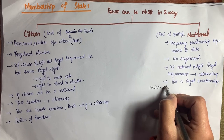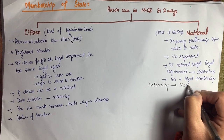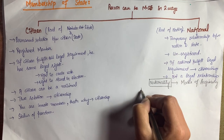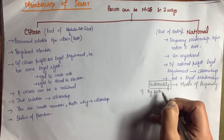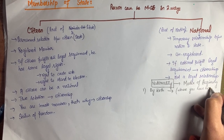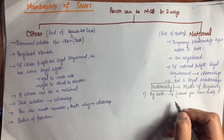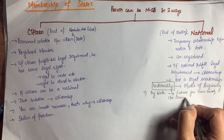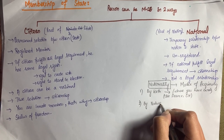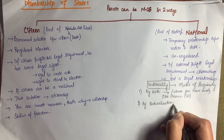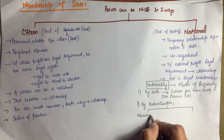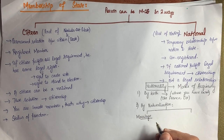Moving towards the modes of acquiring nationality — how a person can acquire nationality. According to Oppenheim, a jurist of jurisprudence, nationality can be acquired in different ways. First, by birth: where a person has been born in any state, they get the nationality of that state, like France or the UK.